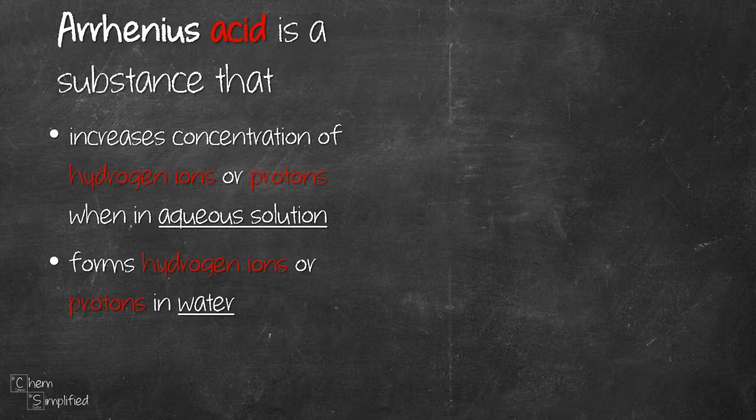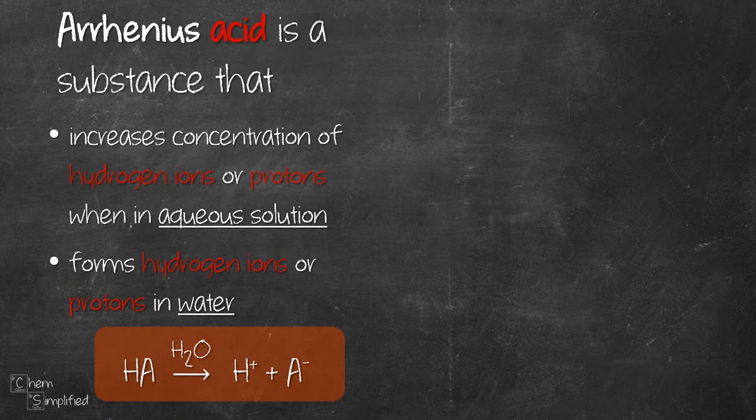We can represent the definition in a general equation like this. We write HA to represent acid. H2O is written above the arrow since it doesn't participate in the reaction, it's just there as a solvent. Sometimes you'll see that there's AQ or aqueous written next to the acid instead of H2O above the arrow. Both ways are fine.